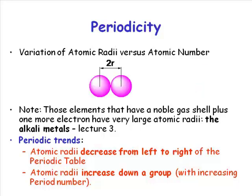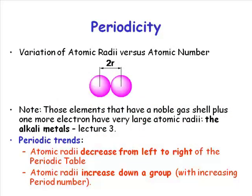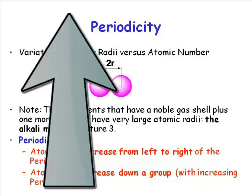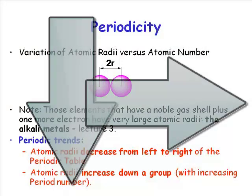Effective nuclear charge is such a powerful concept and it explains so much of the periodicity of the patterns that we see in the periodic table. It's slightly easier to understand what happens as you go down a group. As you go down a group in the periodic table, you are increasing the principal quantum number, which gives the energy of that shell. The higher in energy the shell is, the further away from the nucleus. So you see an increase in atomic radii as you go down a group, and a decrease as you go left to right.